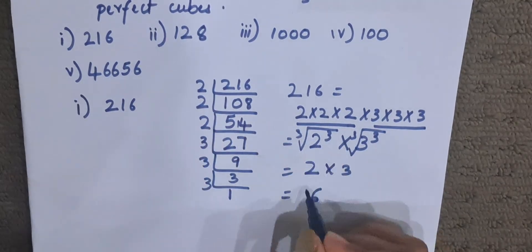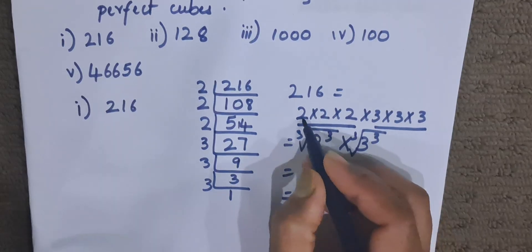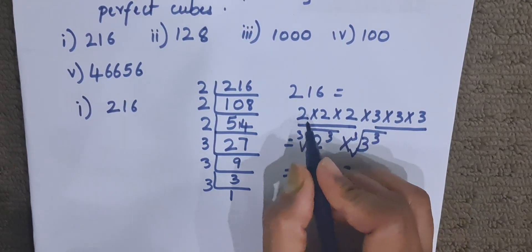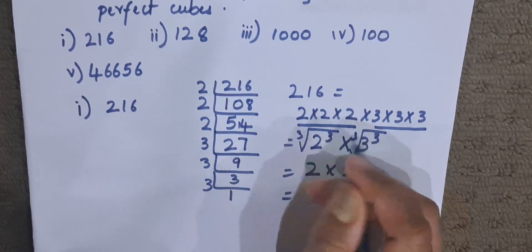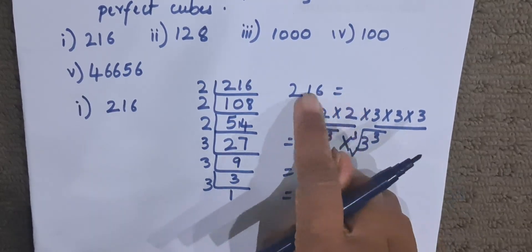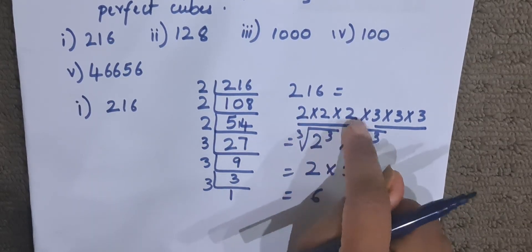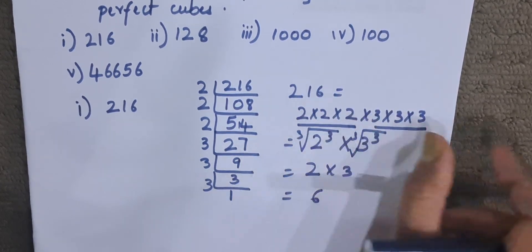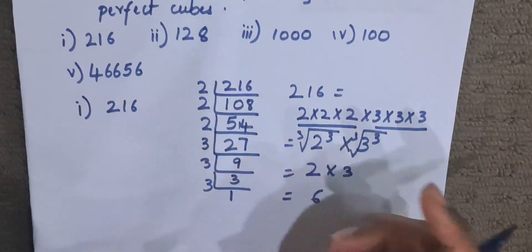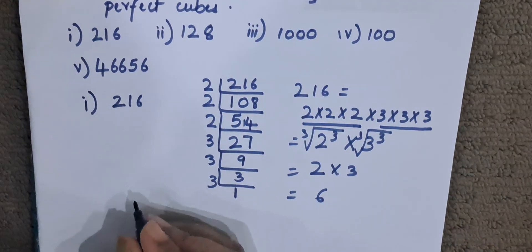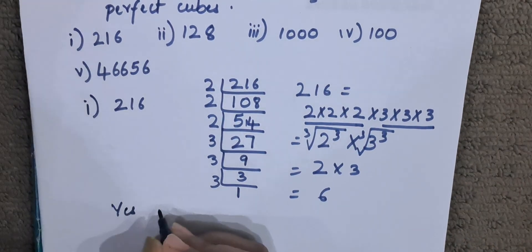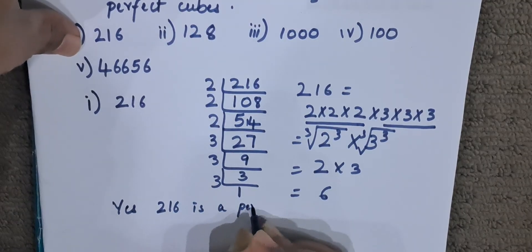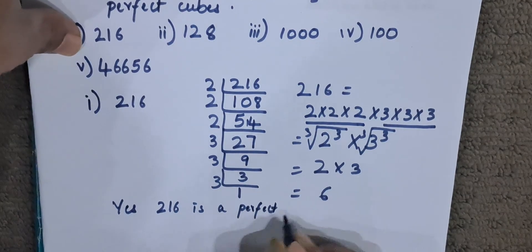Since we have a group of three 2s and a group of three 3s — both forming complete groups of three same numbers multiplied by themselves — 216 is a perfect cube.